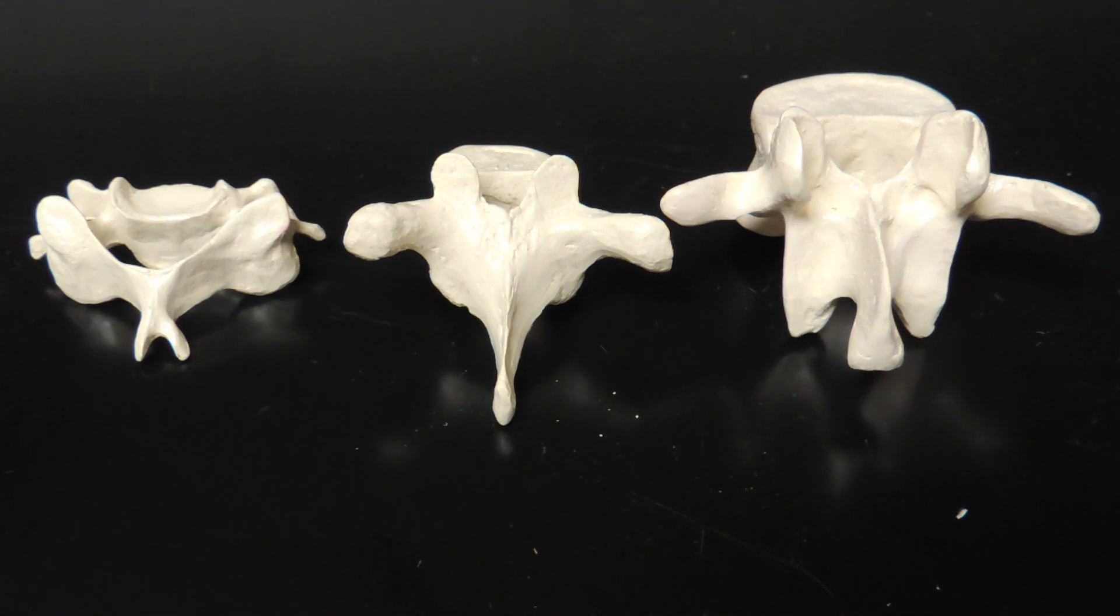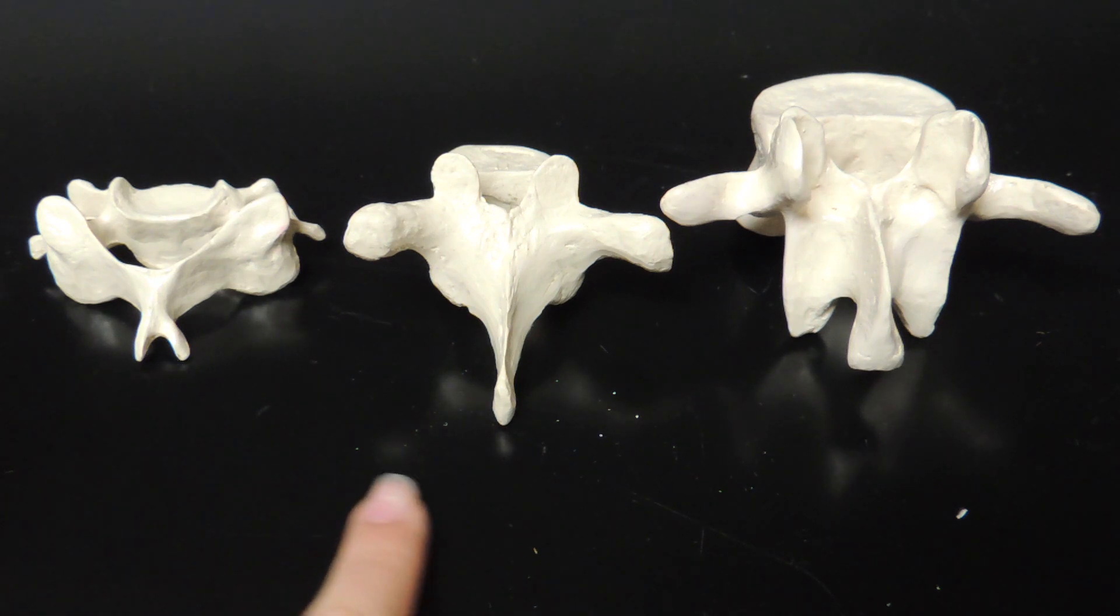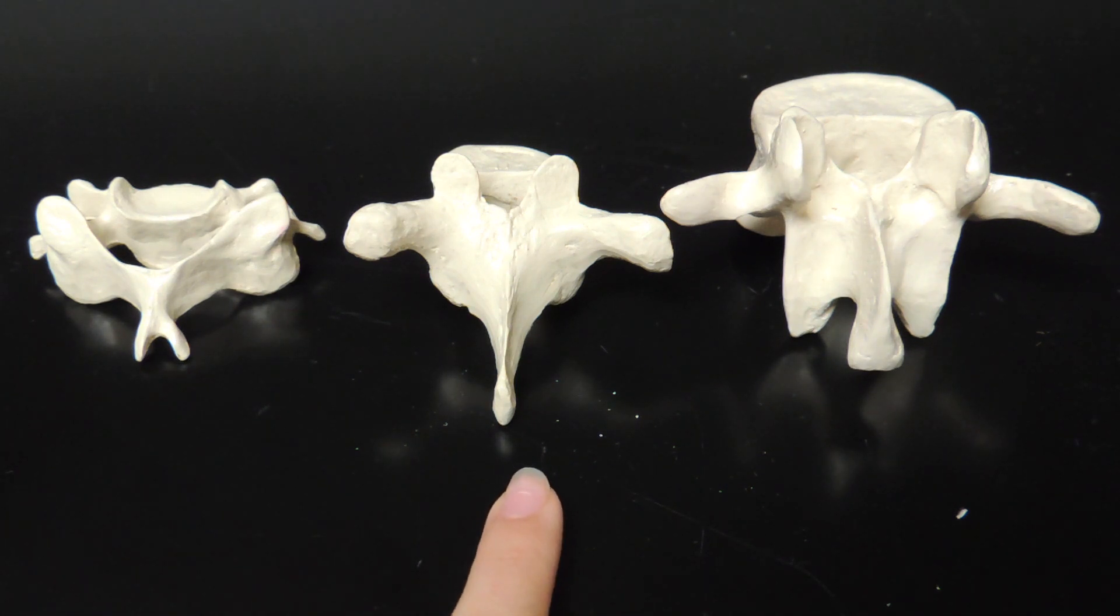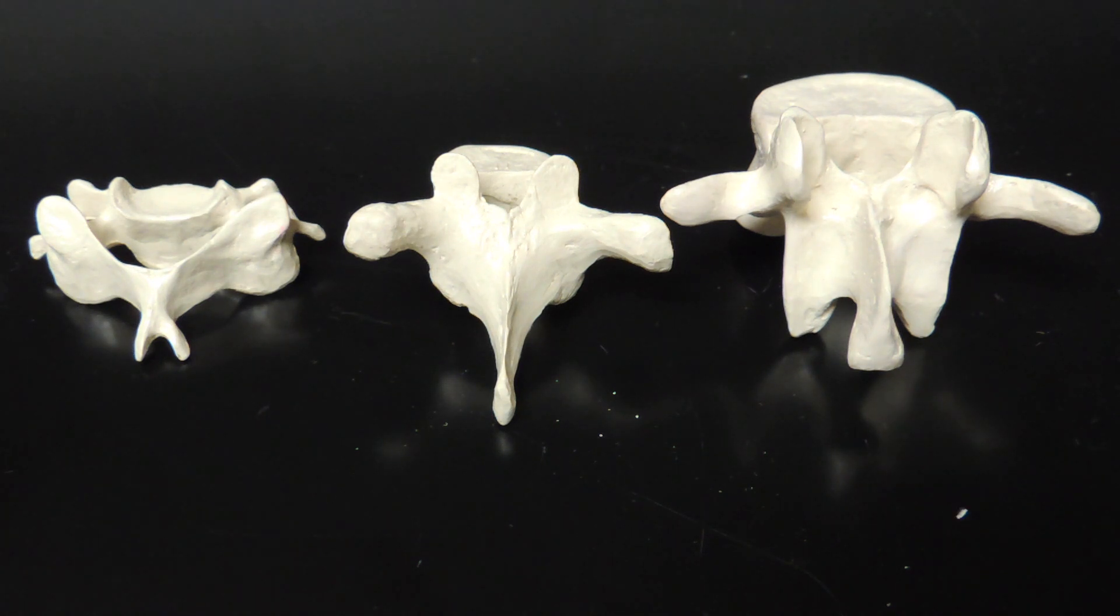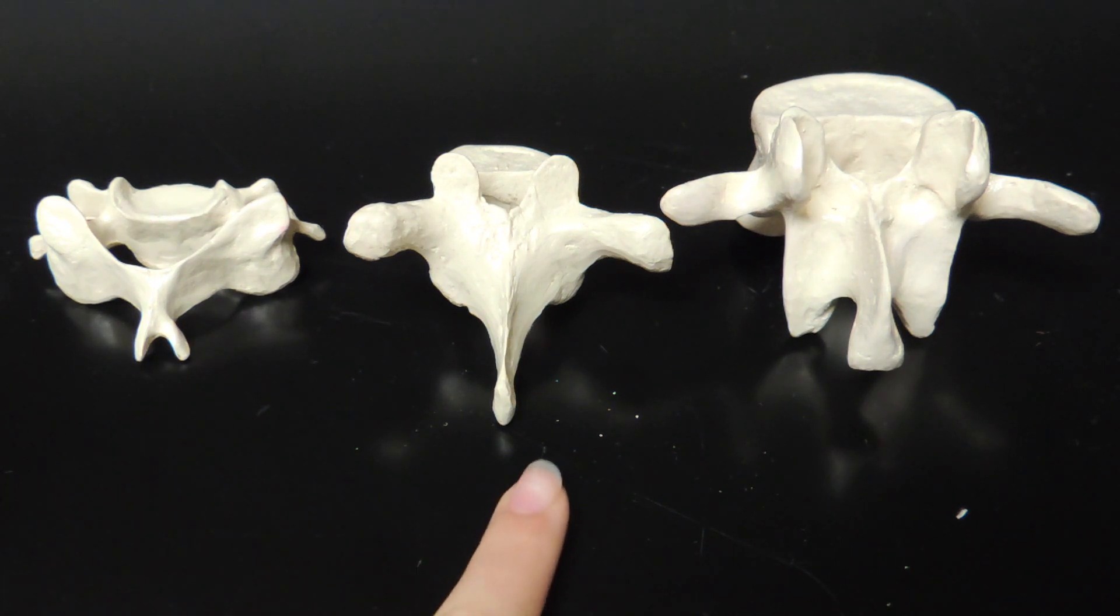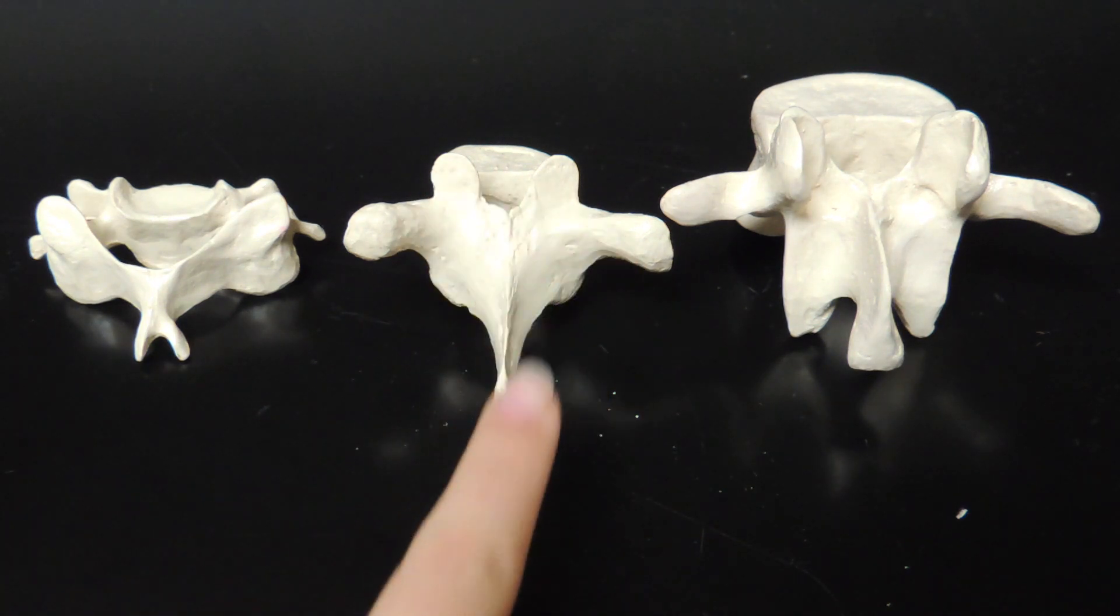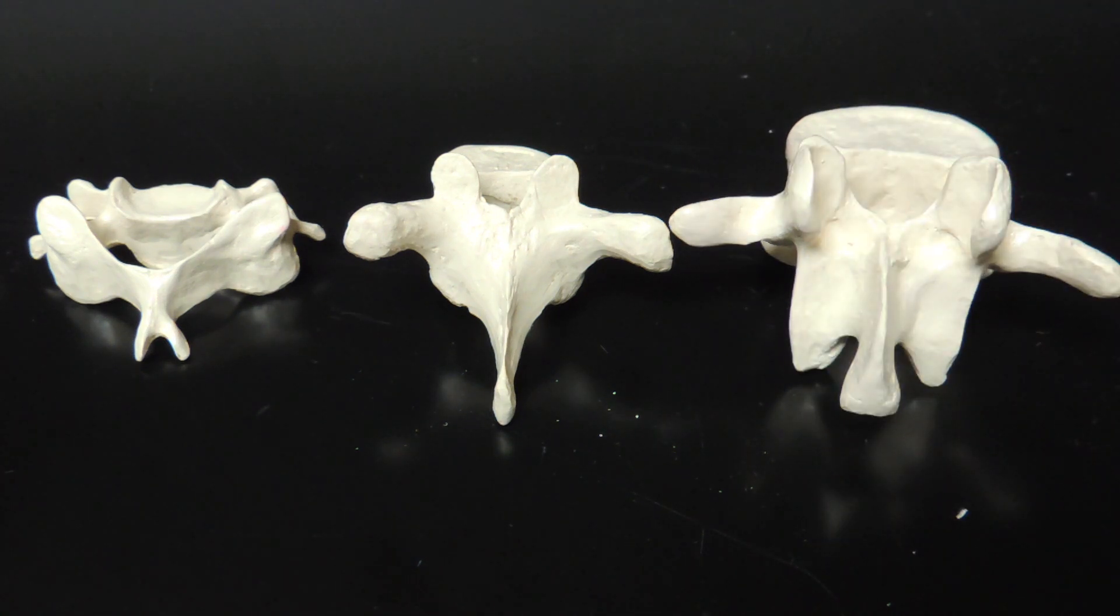These are the three vertebrae you need to know: the cervical, the thoracic, and the lumbar. They do not look anything alike. This kind of looks like a fishtail, this kind of looks like a giraffe, and this one kind of looks like a moose. They all have very distinct features, but their landmarks are pretty similar with the same names.